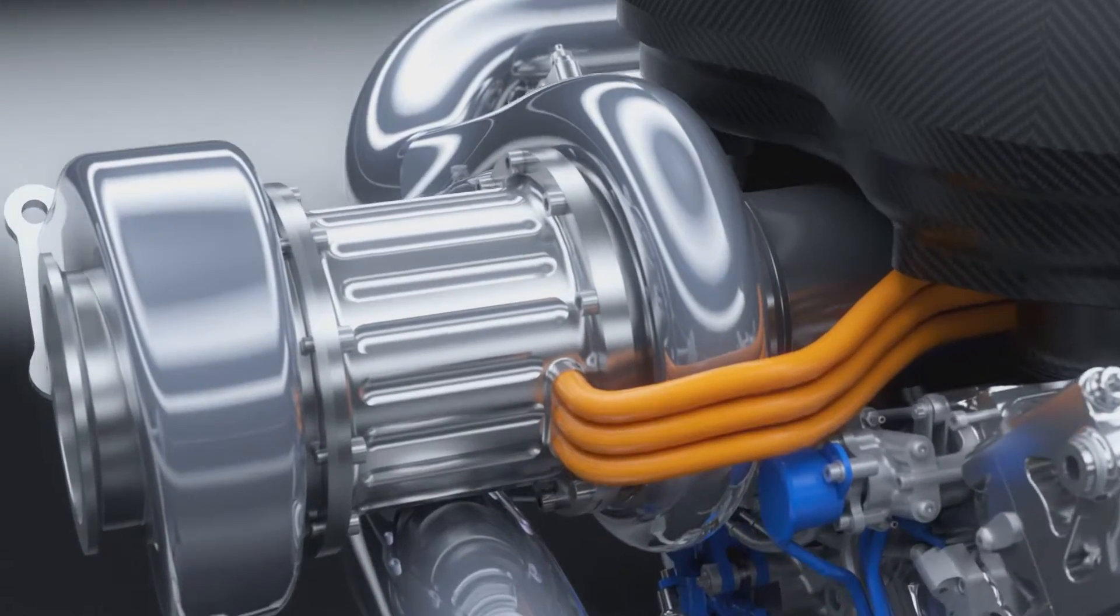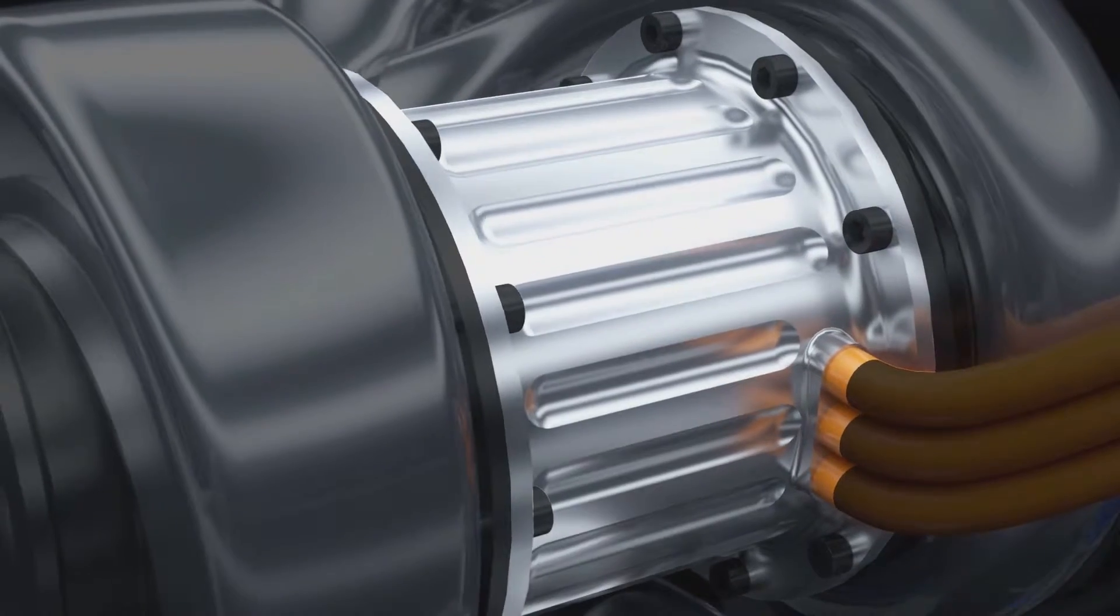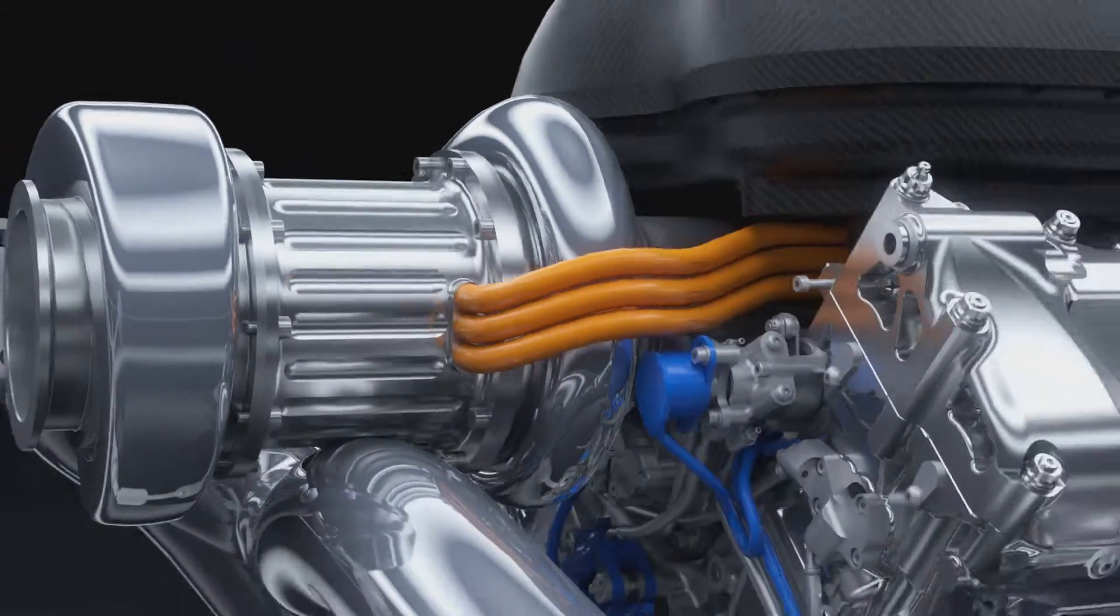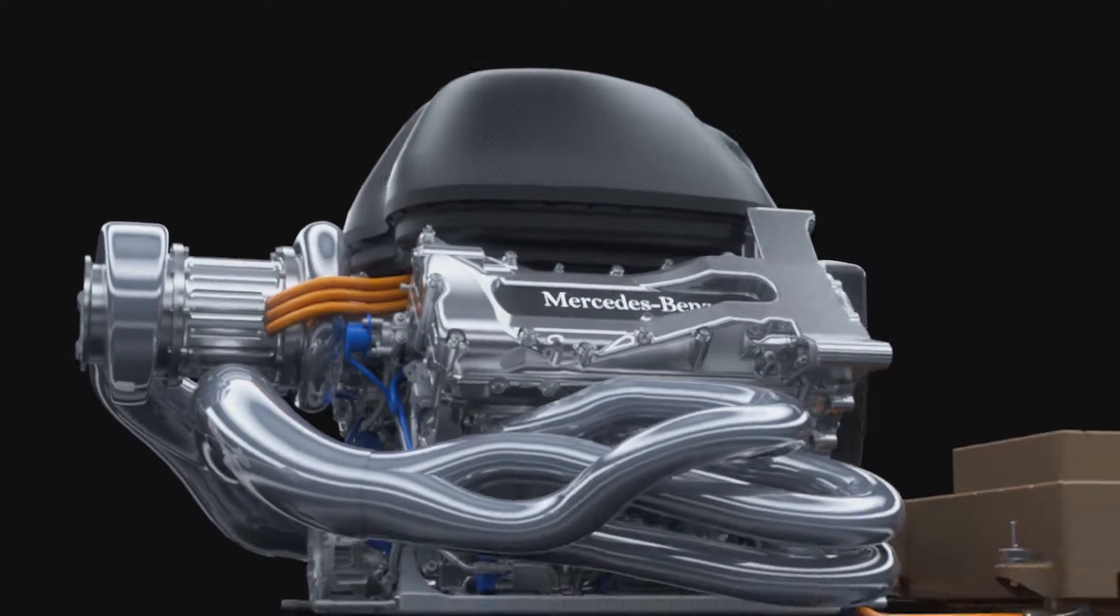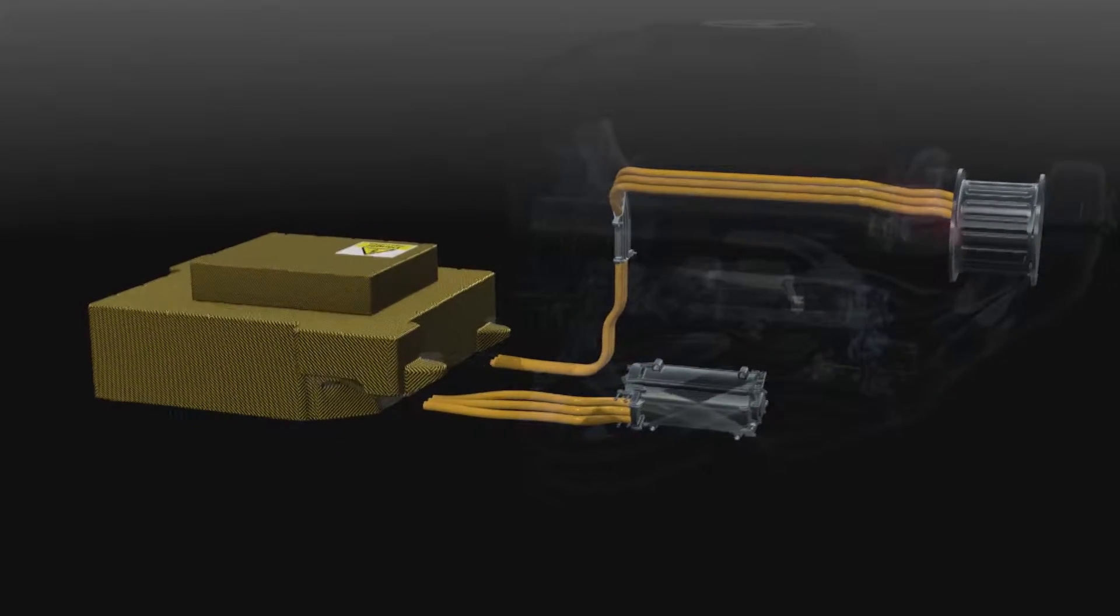The second motor generator unit, the MGU-H, harvests the turbo energy. As a motor, it spins up the compressor to eliminate turbo lag, but it can also send energy directly to the other electric machine and vice versa for maximum efficiency.